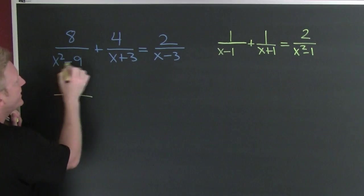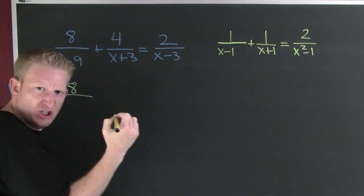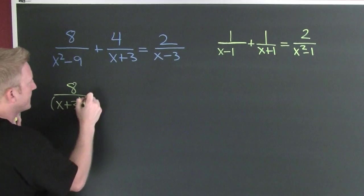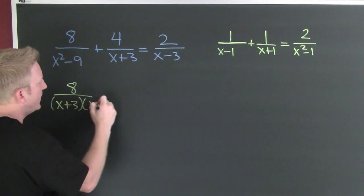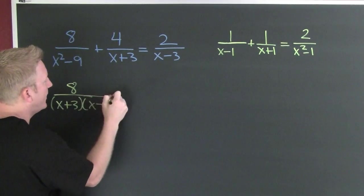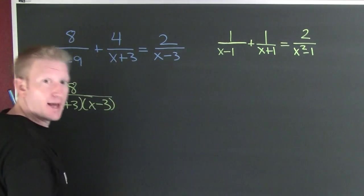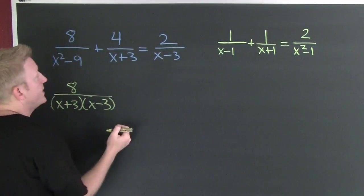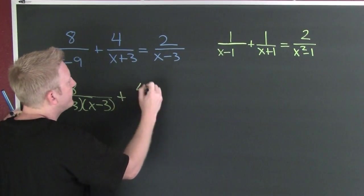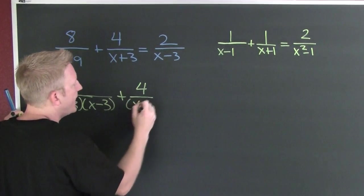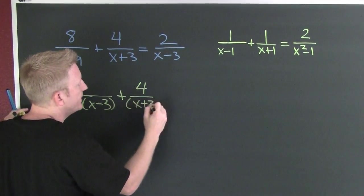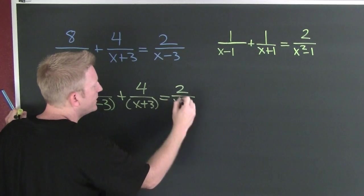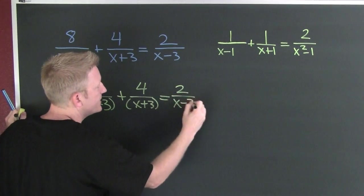Eight divided by — X plus three, X minus three. And convenient for us, it just happens to be the denominators of my other terms in this equality. Plus four over X plus three. Two over X minus three.